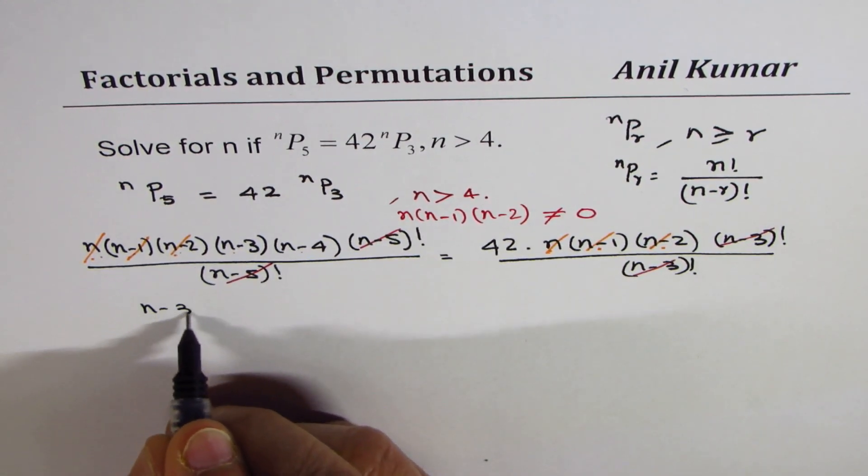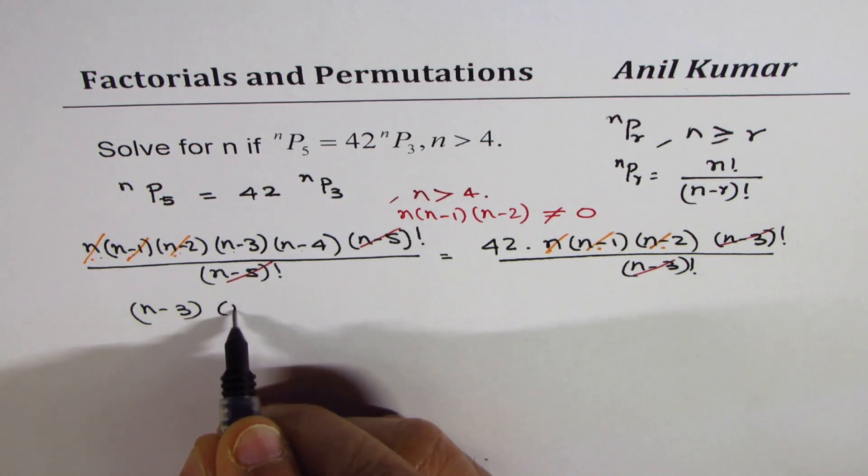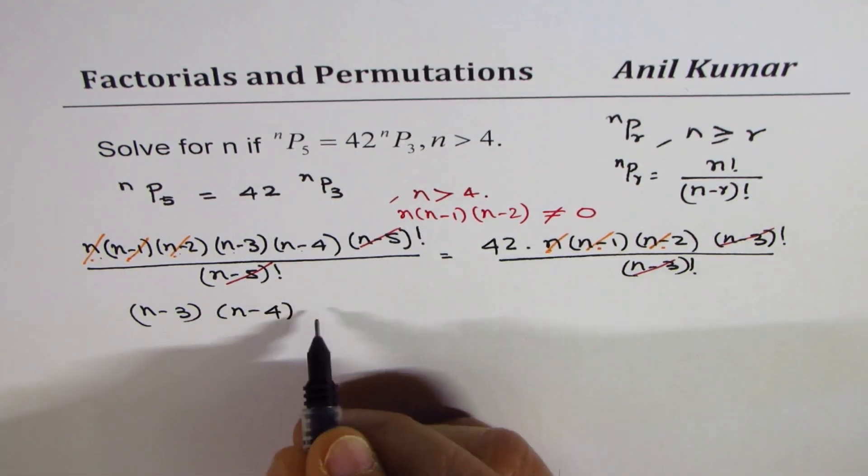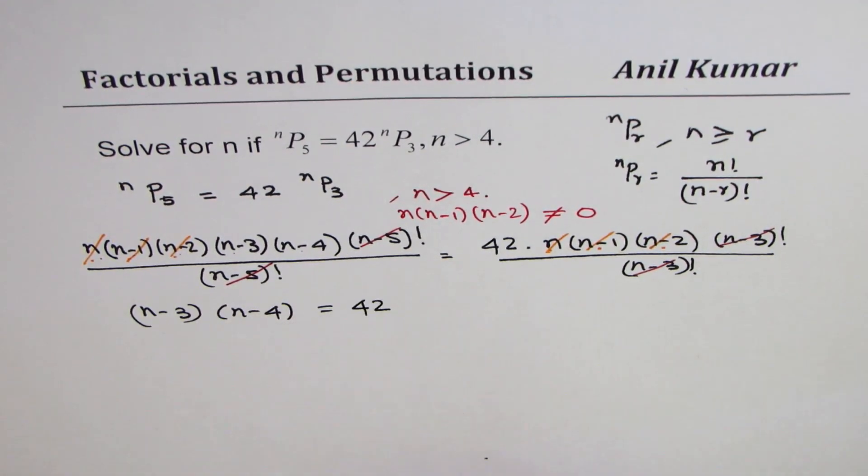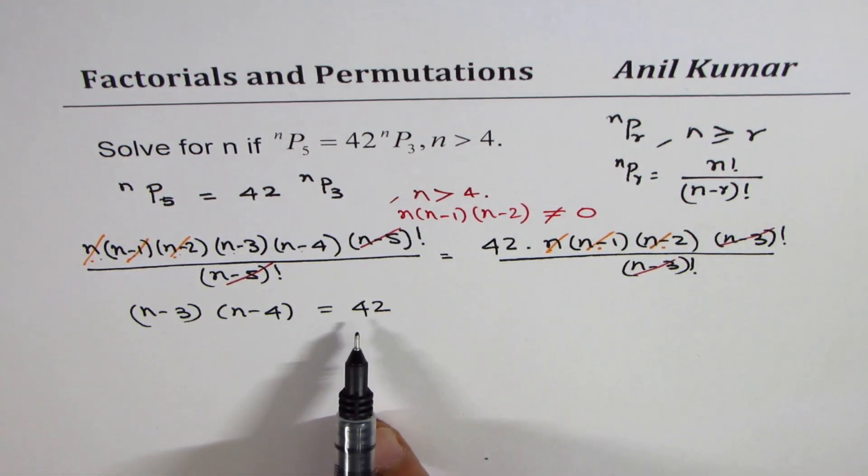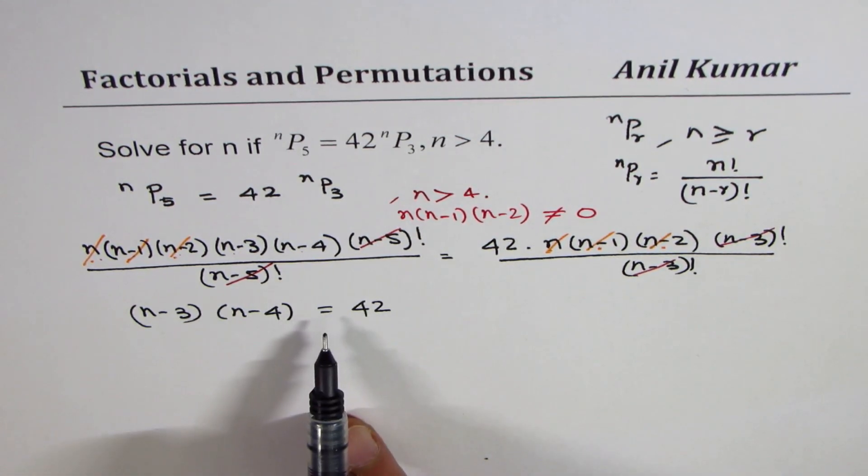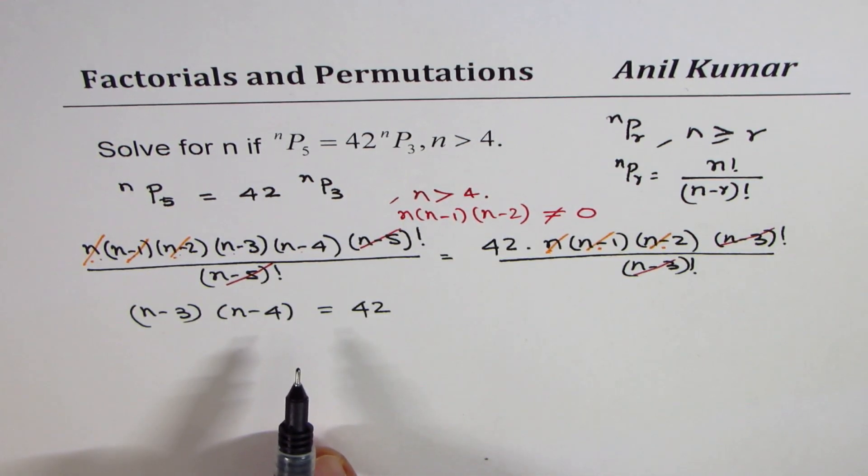So what are we left with? We are left with (n-3) times (n-4) equals 42. Now, this is basically a quadratic equation. Let us see.